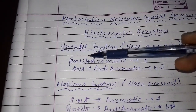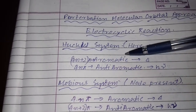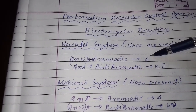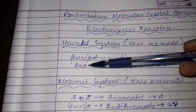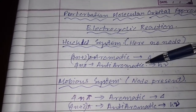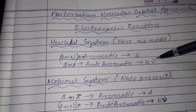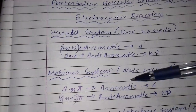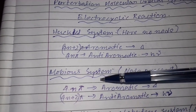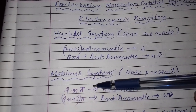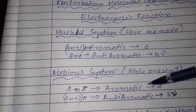The 14pi electronic system is also aromatic and thermally allowed. In the 4n pi electronic systems they are anti-aromatic and photochemically allowed. In the Möbius system, where nodes are present, 4n pi electronic systems are aromatic and thermally allowed.